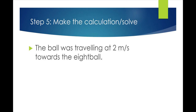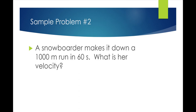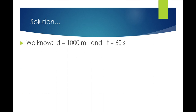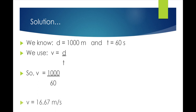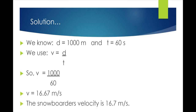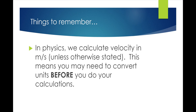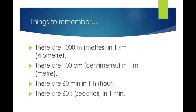In physics, we calculate velocity in meters per second unless otherwise stated. This means you need to convert units before doing calculations. Remember: there are 1000 meters in a kilometer, 100 centimeters in a meter, 60 minutes in an hour, and 60 seconds in one minute.